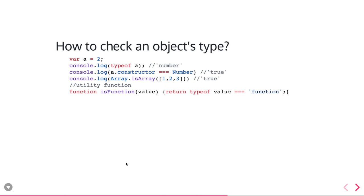How we can check the type of an object is also important. What should be the type of null? What should be the type of undefined? typeof undefined is 'undefined', typeof null is 'object'. As you can see, typeof a number gives you 'number' as a string in the output. Array.isArray() is the method to check if something is an actual array. You can also check a.constructor === Number returns true.